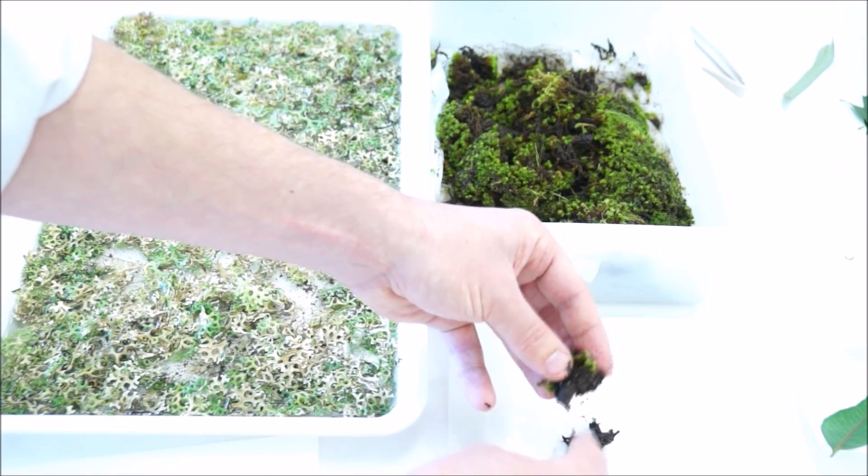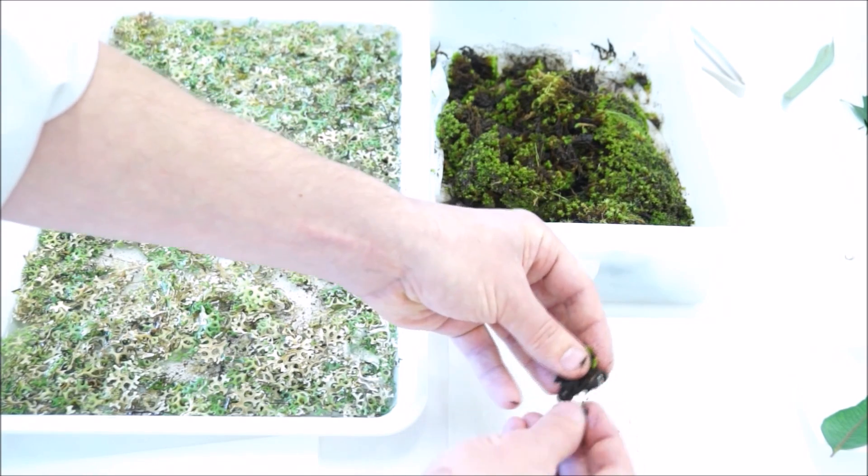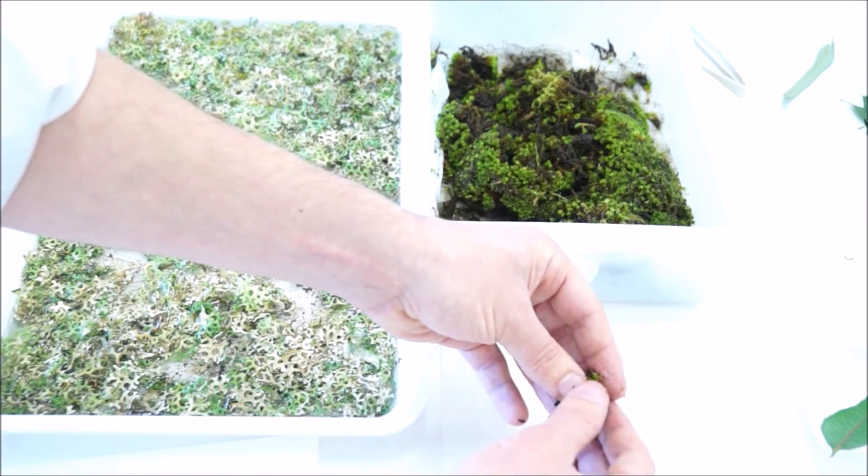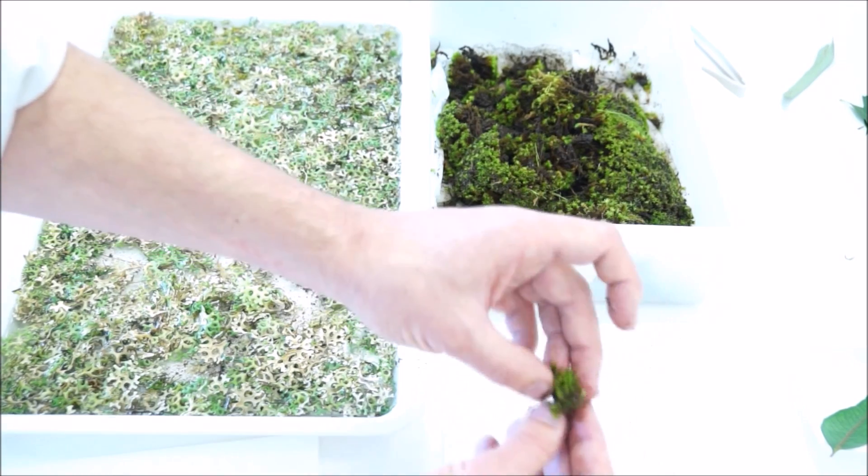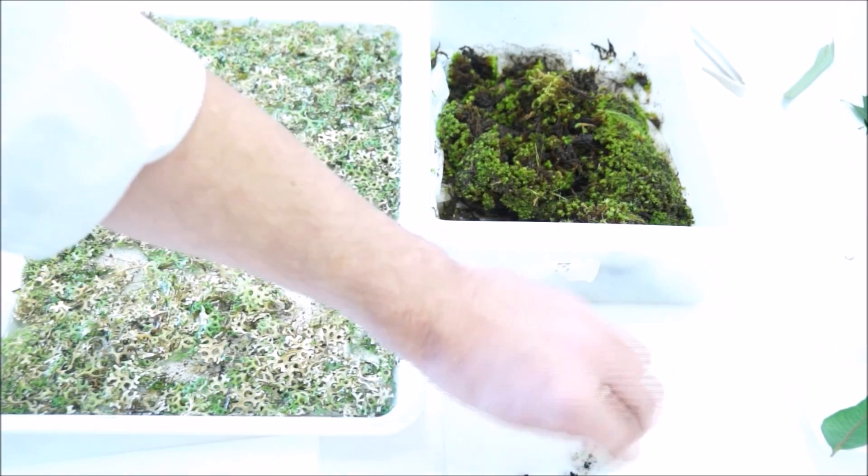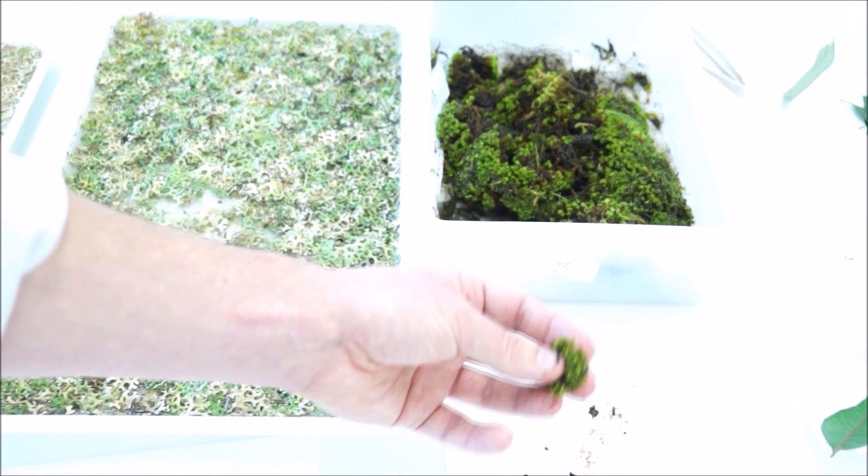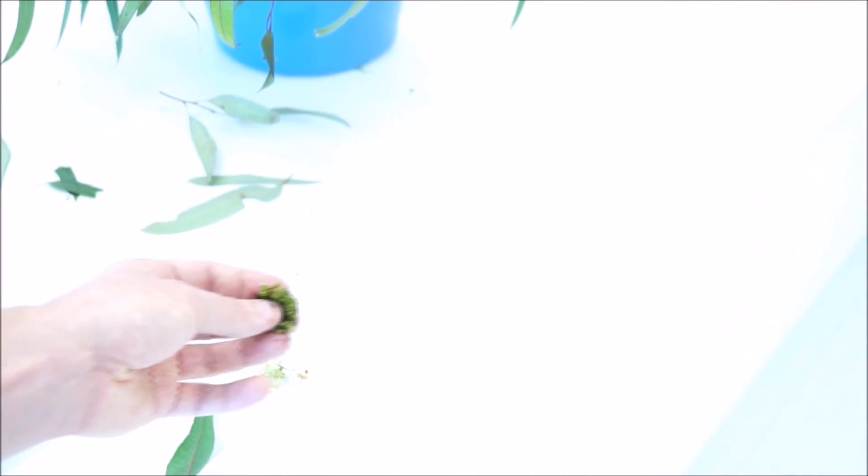You may want to even give it a rinse under the tap, and if you do, remember that you're wetting the outside of the plant, so perhaps give it a blot on the paper. But once you've done that, that's three samples.